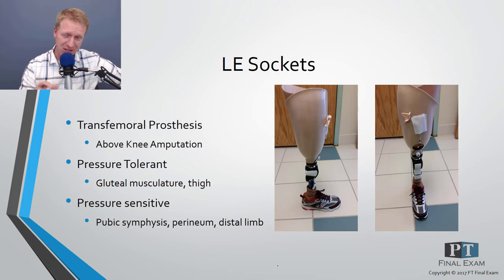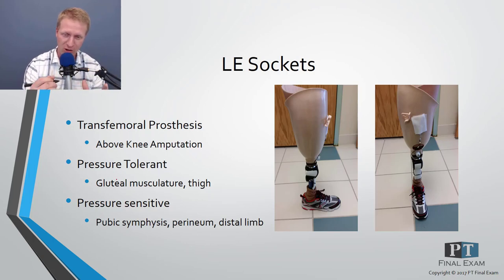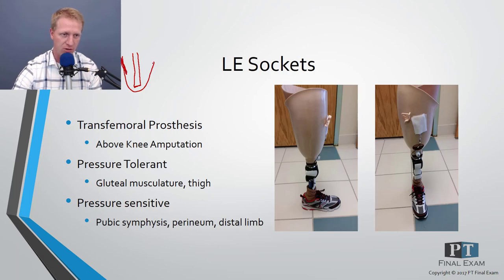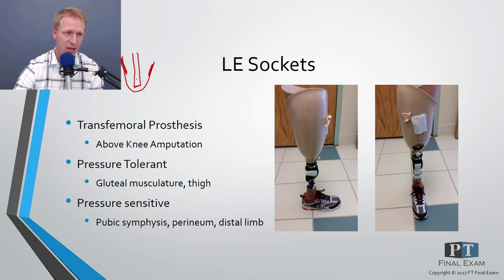With a transfemoral prosthesis — also called an above-knee amputation — a very similar principle applies. Move pressure to more tolerant areas away from the residual limb, which contains a sharp distal femur that is very sensitive to pressure. Move pressure to the gluteal musculature, the lateral walls, and the low medial wall. Avoid the high medial wall, perineum, and pubic symphysis, and minimize pressure on bony prominences.